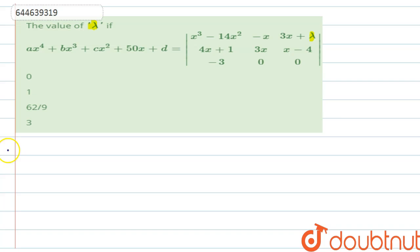We will start solving the determinant here. This is multiplied by x cube minus 14x square. This will be 0. So there will be 0 and minus minus will be plus here.